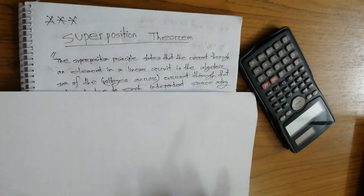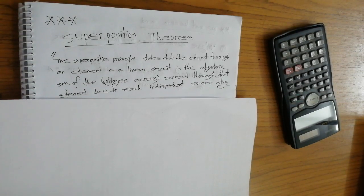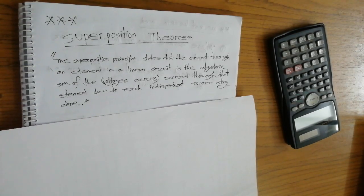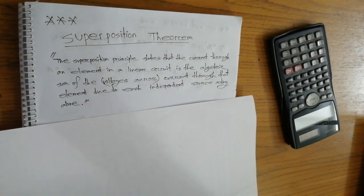The superposition principle states that the current through an element in a linear circuit is the algebraic sum of the currents through that element due to each independent source acting alone. In other words, the current flow through any element equals the algebraic summation of contributions from each individual independent source — that is the superposition theorem.